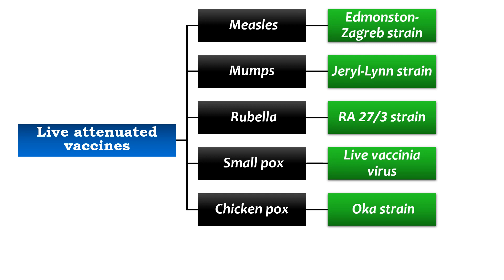The chickenpox vaccine is given to children after one year of age in two doses: the first dose between 12 to 15 months and the second dose between 4 to 6 years. In adults who are seronegative, two doses are given one month apart.